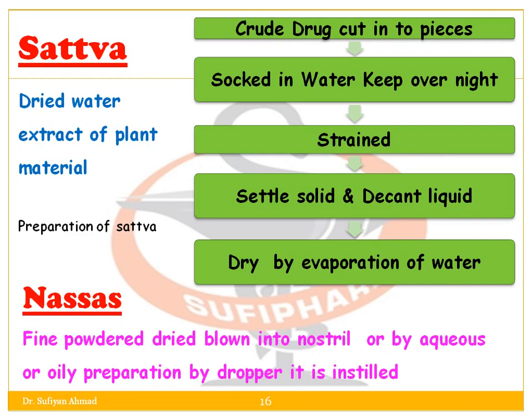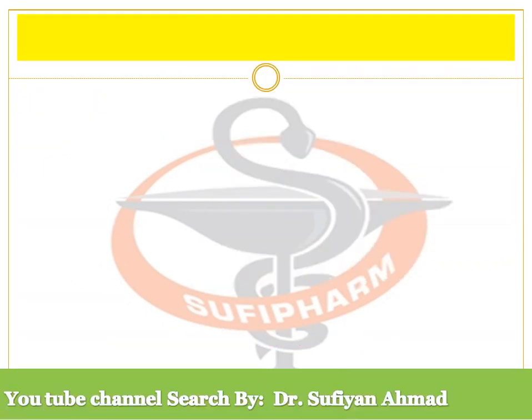Next is Nassas — a fine powdered drug that is blown into the nostril, or administered as an aqueous or oily preparation using a dropper.